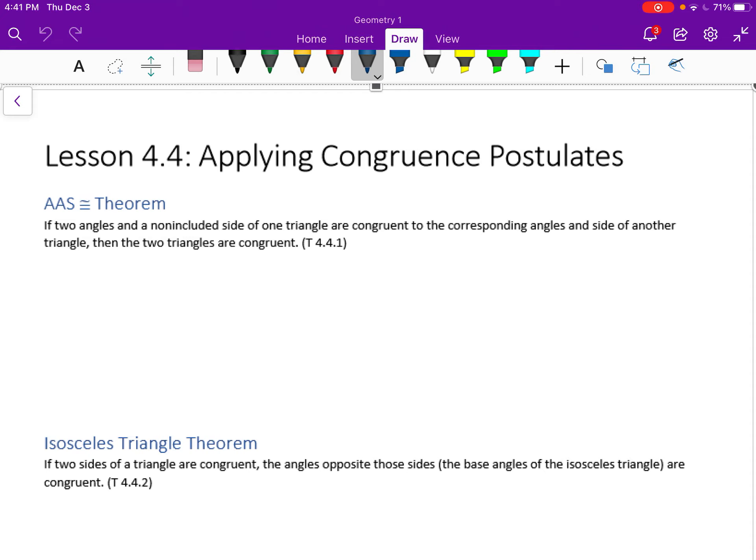And actually, we've already mentioned this angle-angle-side congruence theorem. It says if two angles and a non-included side of one triangle are congruent to the corresponding angles and side of another triangle, then the two triangles are congruent. The main part of that proof is that since two angles are congruent, the third one will be congruent by the third angle theorem, and then we can prove the triangles are congruent by angle-side-angle.